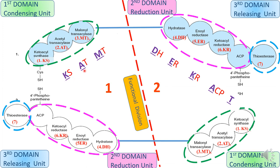A mnemonic to remember these seven enzymes and one cofactor is: KAM CALM D E THE KAT. K stands for ketoacyl synthase, A for acetyl transacylase, M for malonyl transacylase. Then D for dehydratase, E for enoyl reductase, the ACP (phosphopantetheine carrier), K for ketoacyl reductase, and T for thioesterase.